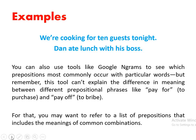Let us look at some more examples: 'we were cooking for 10 guests tonight'; 'Dan ate lunch with his boss.' You can also use tools like Google Ngrams to see prepositions that most commonly occur with particular words. But always remember that this tool cannot explain the difference in meaning between different prepositional phrases — for example, 'pay for' means to purchase, as in 'I am paying for this wallet,' while 'pay off' means to bribe. For that, we need to refer to a list of prepositions that includes meanings of common combinations.